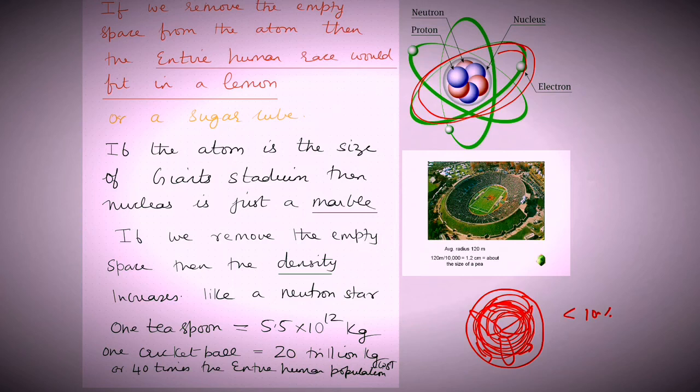So if you compare it, the atom to be the size of the Giants Stadium, then the nucleus would just be one single marble. So most of the things which we see is just an illusion, and it is empty space that we see around, and 99.9999999999999999996% of it is just plain empty space.